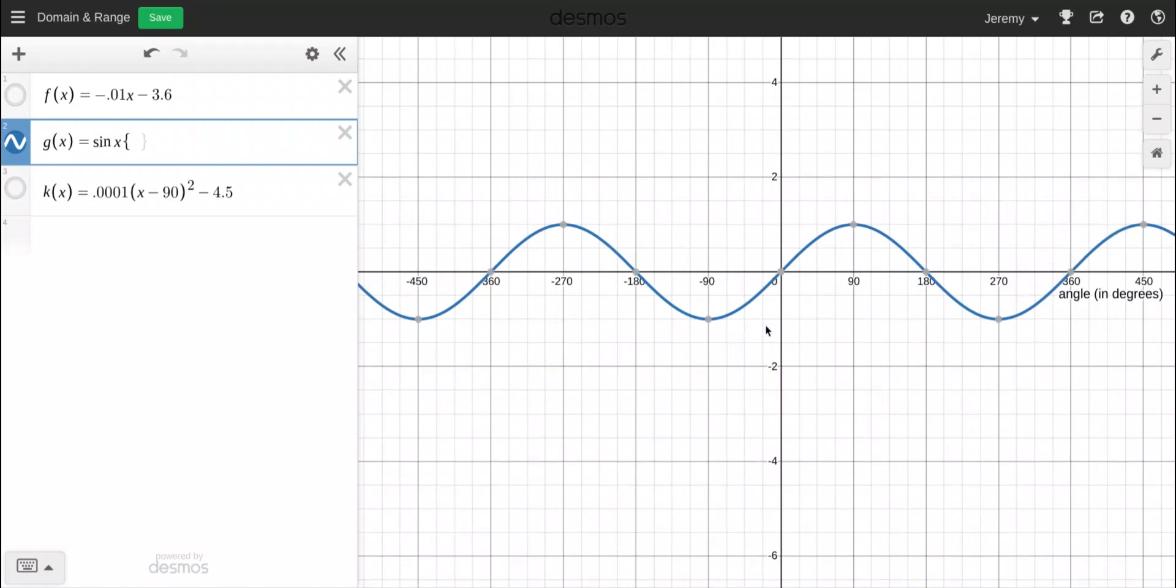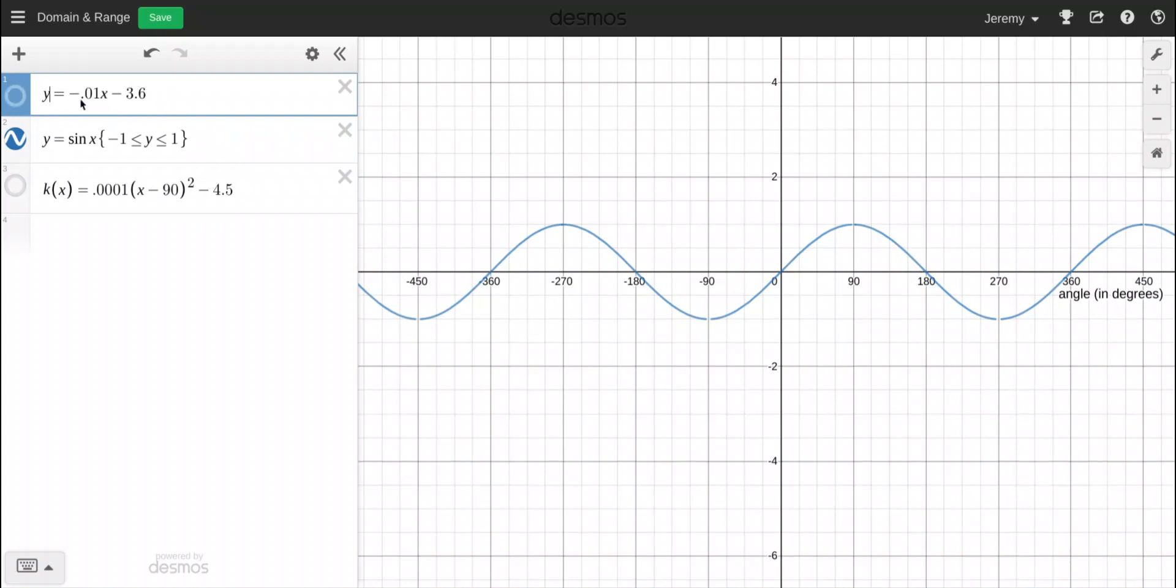However, its range is only from negative one to positive one. And I think I need to maybe put this there. I need to have Y's there. So let me just go ahead and do that real fast. I was trying to put in function notation. I don't know how to restrict the range when it's in function notation.